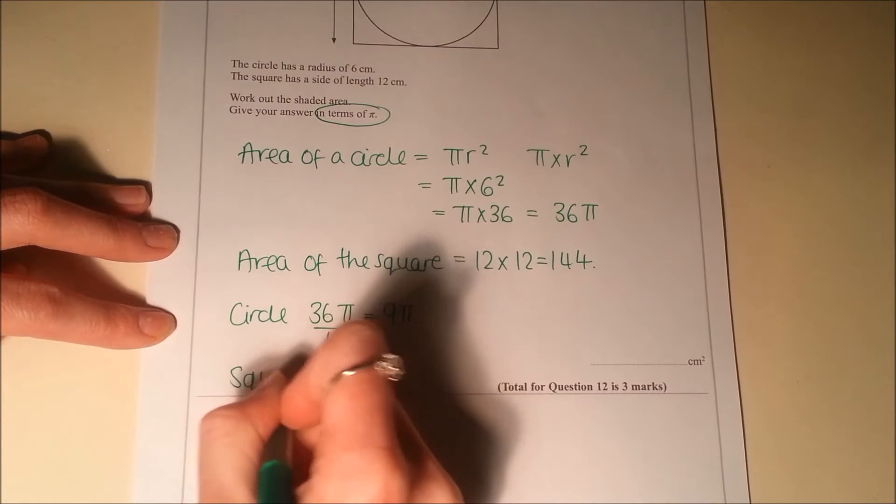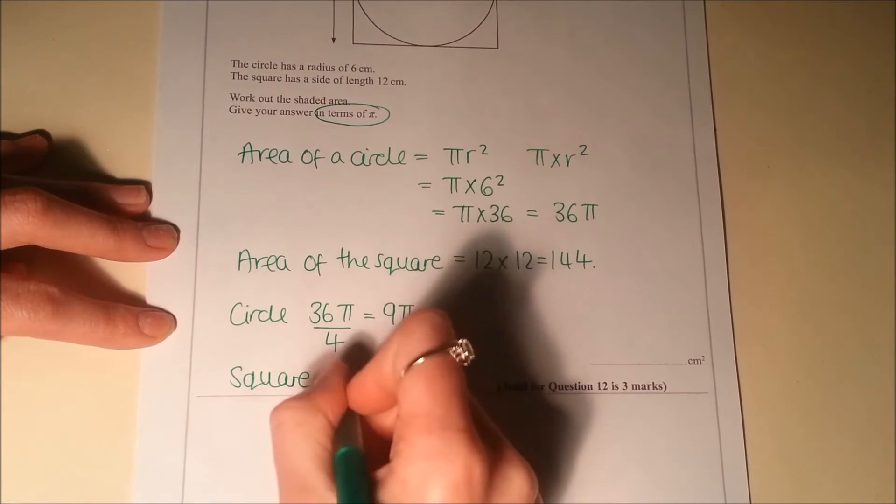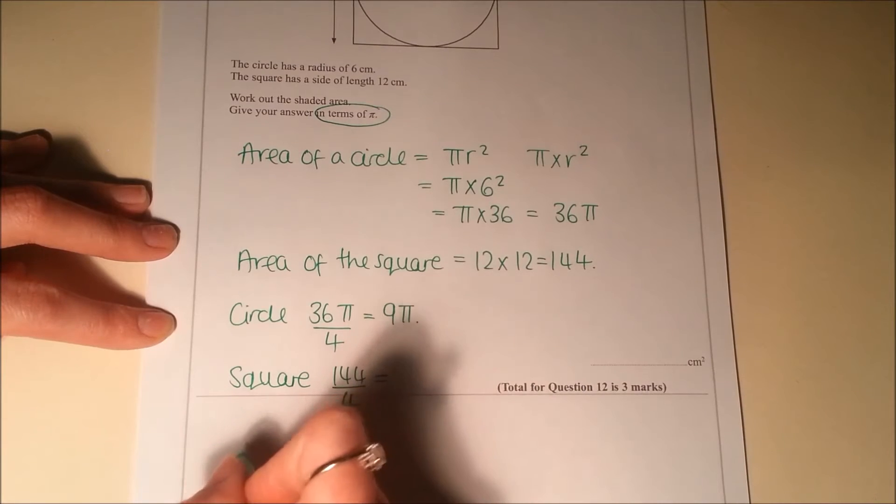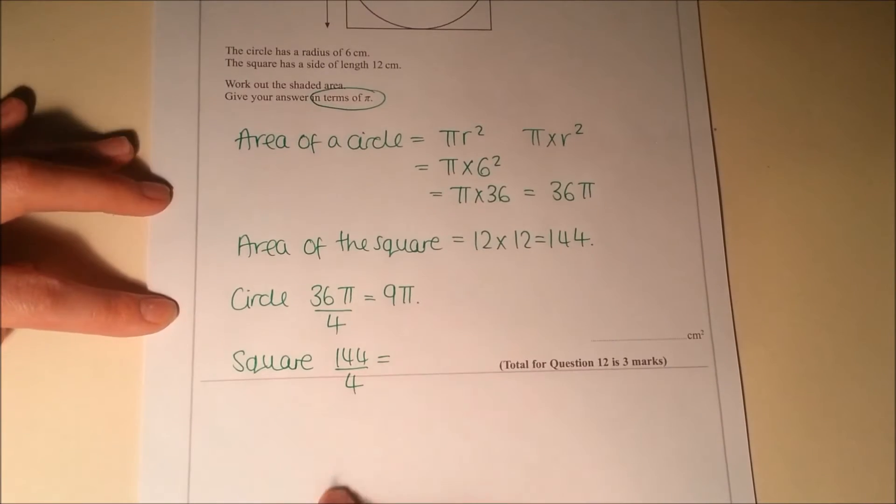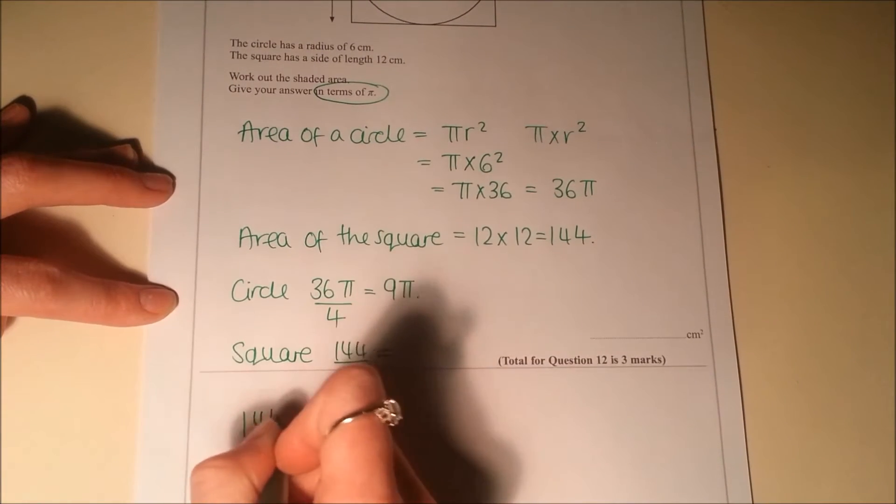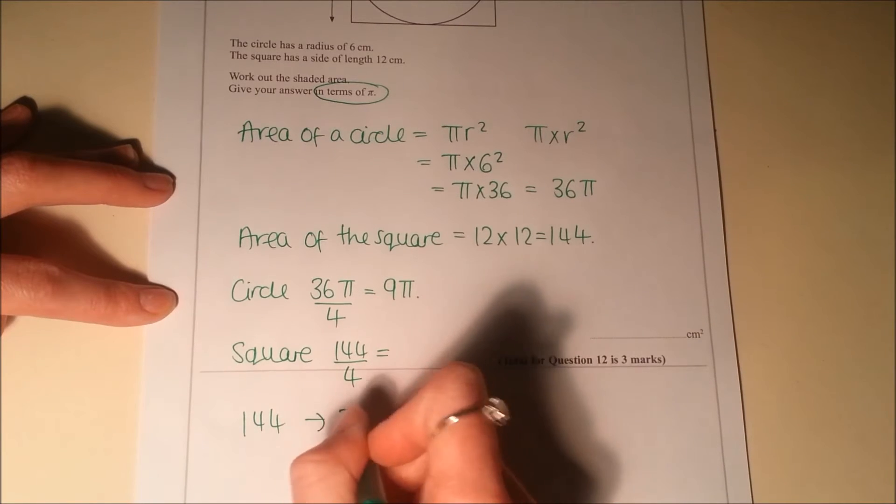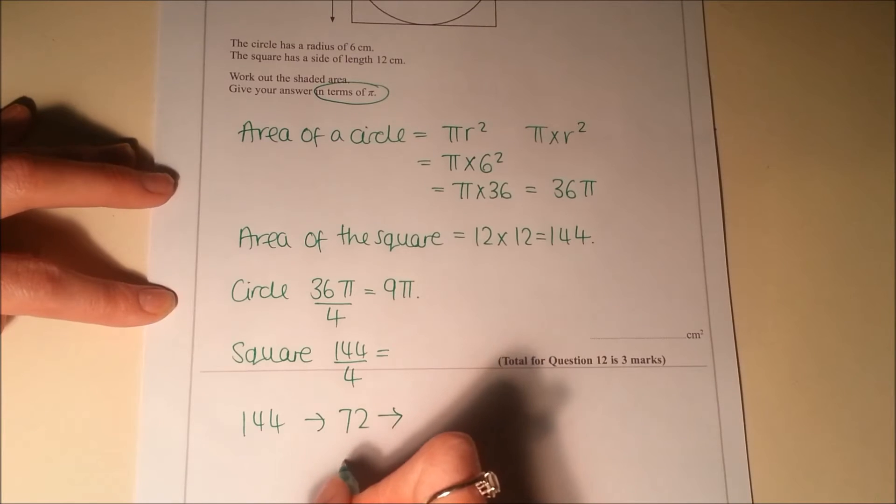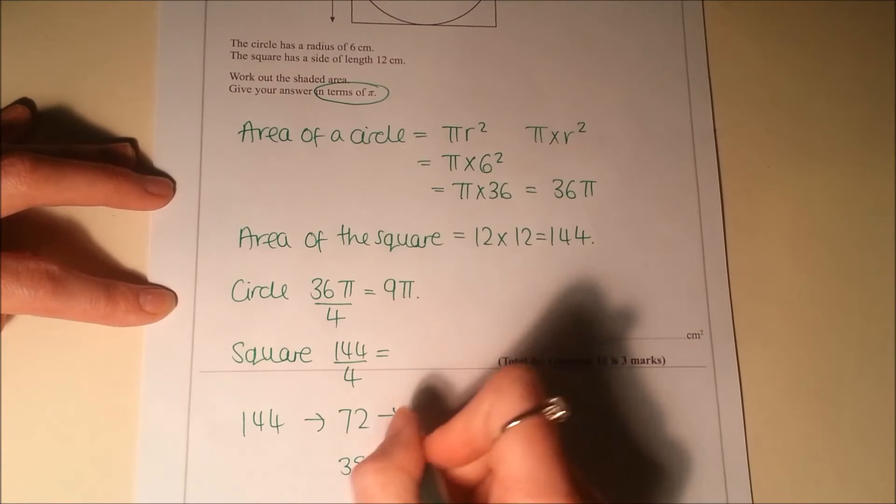And then for the square, it will be 144 divided by 4. So half it, half it again. So half of 144 is going to be 72. Half that again, that's going to be, well, half of 70 is 35, so half of 2 is 1, so it's going to be 36.